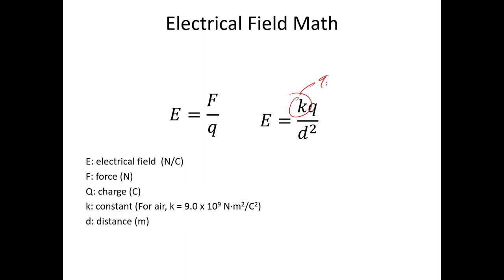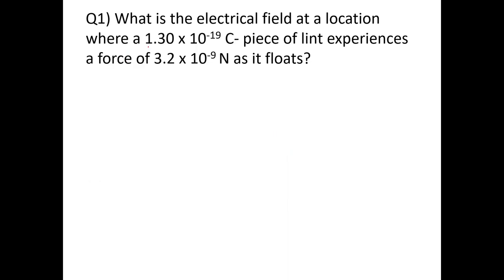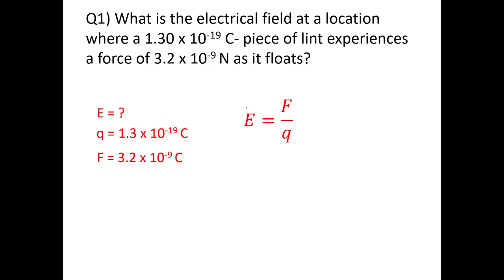If we're given charge and distance, we'll have to use k = 9 × 10⁹, the same electrostatic constant as in Coulomb's law. We'll always be dealing with air as the medium around the charge. For our first example: what's the electrical field at a location where a 1.30 × 10⁻¹⁹ coulomb charge experiences a force of 3.2 × 10⁻⁹ newtons? We have charge and force, so we use E = F/q — plug in the values and there's your answer.